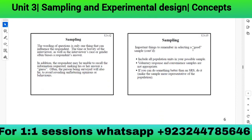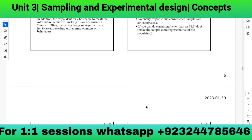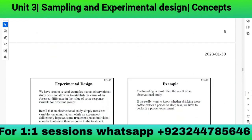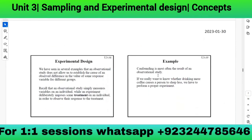Important things to remember when selecting a good sample: include all population units in the possible sample. Voluntary response and convenience samples are not appropriate. If you can do something better than SRS, do it — the goal is to make the sample as representative of the population as possible.